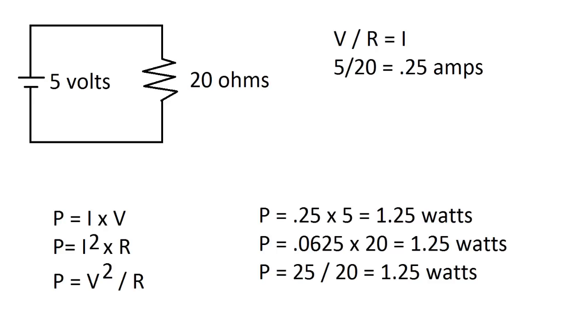Now I plug in our numbers, so we have power equals 0.25 amps times 5 volts, and this equals 1.25 watts. Then we have power equals current squared, which is 0.0625, times 20 ohms, and this equals 1.25 watts. Then we have voltage squared, which is 25 over 20 ohms, which is 1.25 watts.